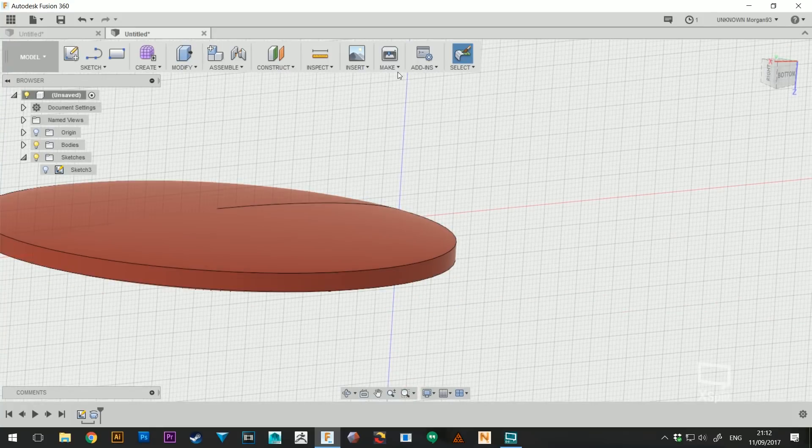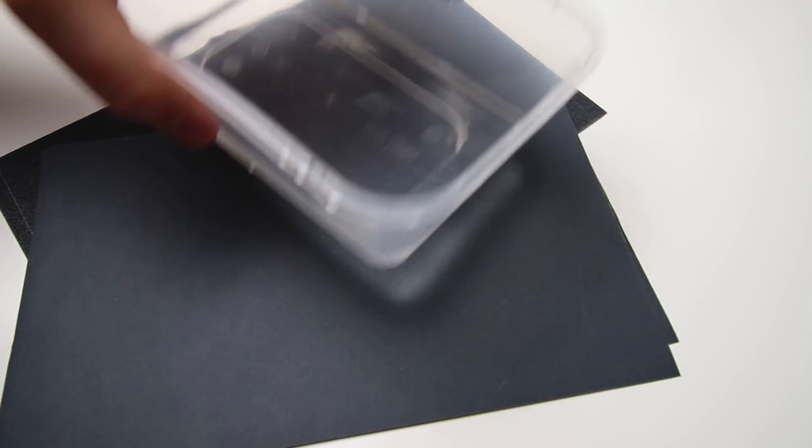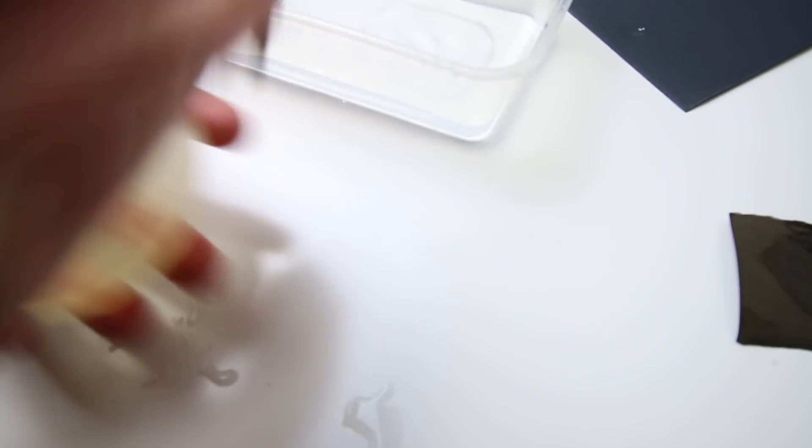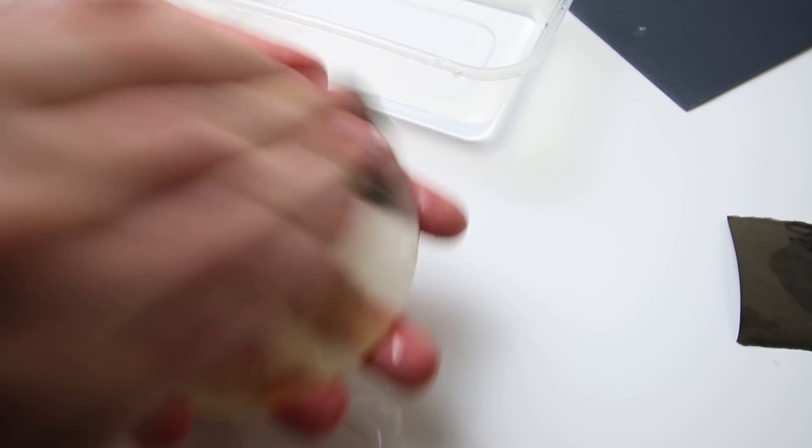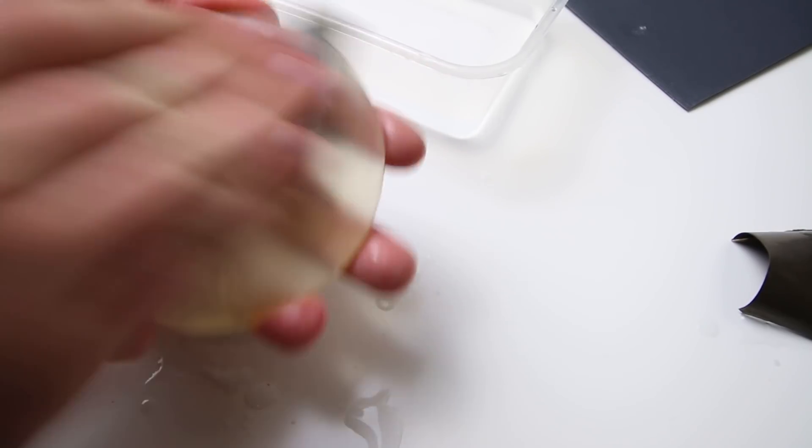Next up was sanding. I started with a heavy grit and went all the way up to a super high polish paper, all wet and dry. Went through about seven different grades, all the way to 3000 grit and then it was time for the polishing wheel.